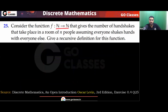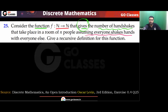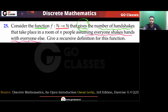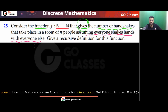Please read this question. This function outputs the number of handshakes that take place in a room of n people — in a room of 5 people — assuming everyone shakes hands with everyone else. So the output of this function is the number of handshakes in a room of n people, taking n equal to 5.